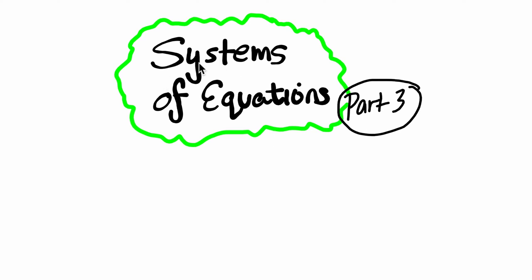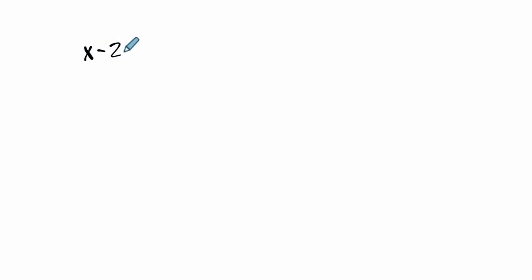Hello, welcome. We're on part 3 of Systems of Equations, and what we're focusing on are systems with three variables, but much of what we do applies beyond three variables. So just imagine for a moment — imagine you have a system with an x, a y, and a z.